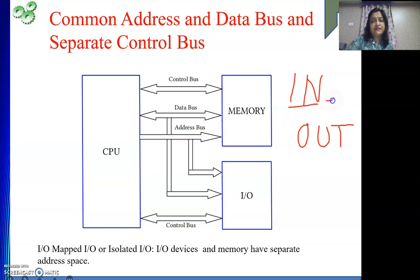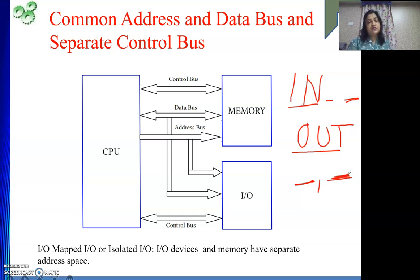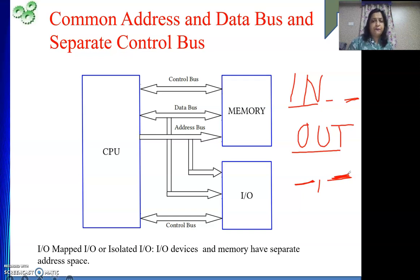With IN, you specify a register and the device port number. With OUT, you specify from where you are sending the data and to which device. These specialized IN and OUT instructions can be used because we have a separate address space. Separate address space does not mean separate physical wires - we have the same set of wires on which the address comes, but depending on the control signal, either memory or the IO device is going to respond.